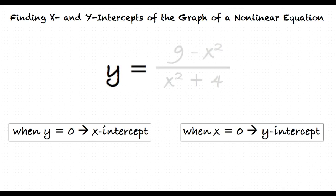First, let's find the y-intercept. Substitute 0 for x to yield (9 - 0²)/(0² + 4). Thus, the y-intercept is 9/4.